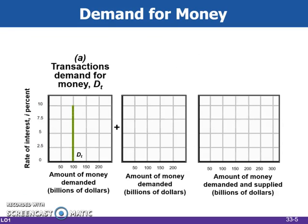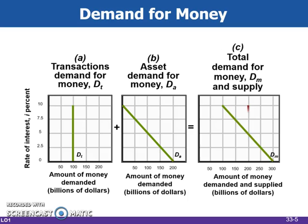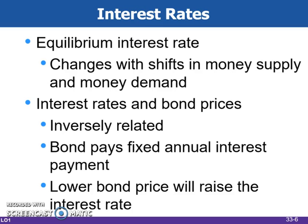The total demand for money is the sum of the transaction's demand for money plus the asset demand for money. The transaction's demand for money is assumed to be vertical, as it depends on GDP rather than the interest rate. The asset demand for money is inversely related to the interest rate, meaning as interest rates go up, the amount of money demanded goes down. When we introduce the supply of money into the graphs, we find an equilibrium point for money. There's an equilibrium interest rate that will cause the supply of money available to equal the demand for money. This rate can be thought of as the market-determined price that borrowers must pay for using someone else's money over some period of time.